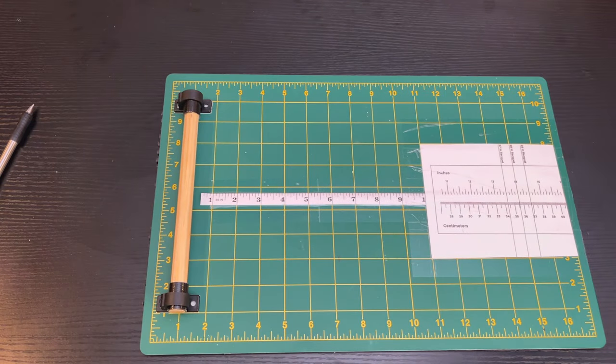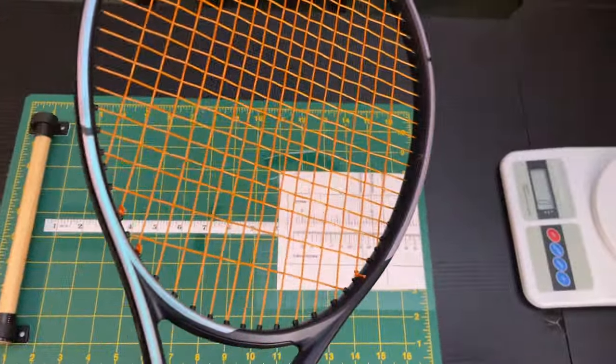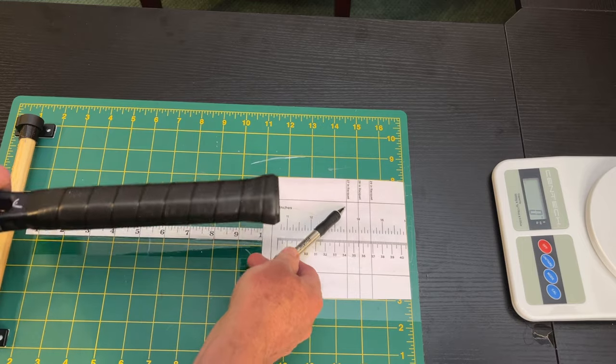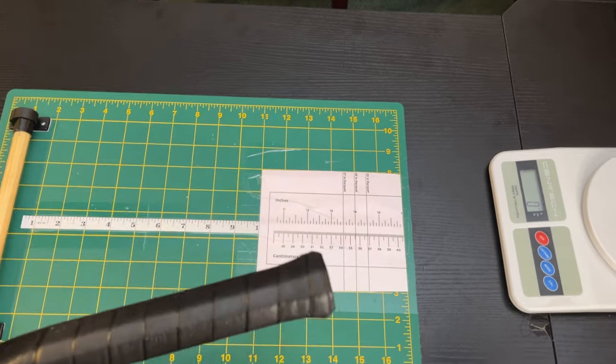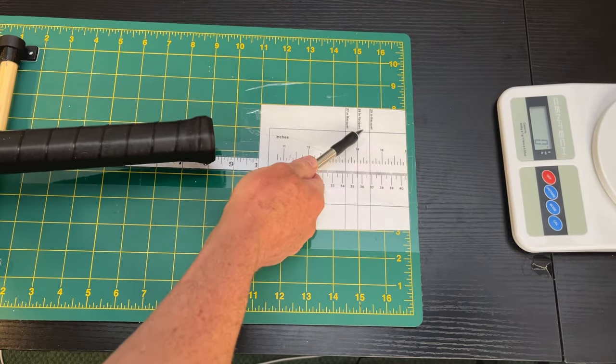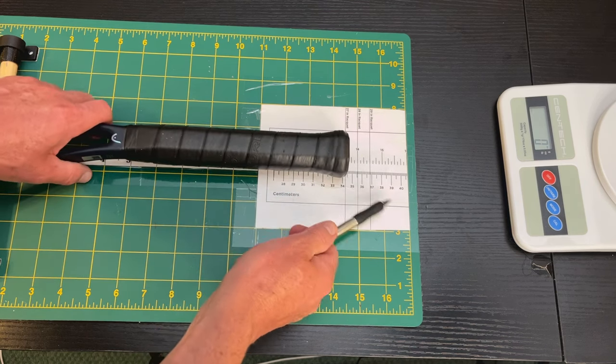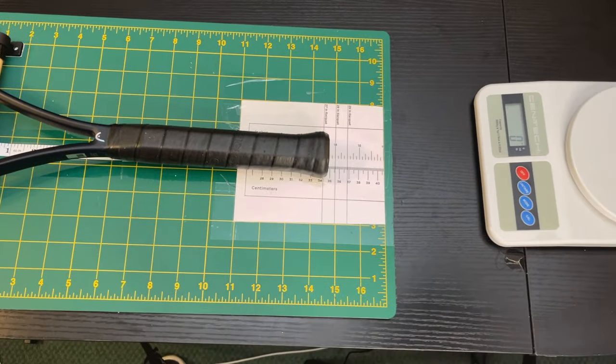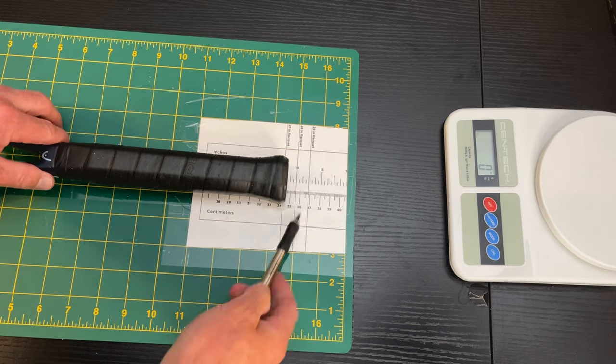Now let's check out the specification for balance. We'll slide the camera over, give you a better view. Since this is a 27.5-inch racket, if it was evenly balanced, we have the 27-inch marker right there. 28-inch marker right there. So 27.5. If it was evenly balanced, we would be right there.